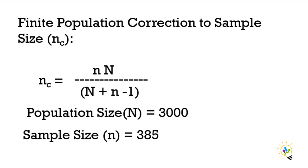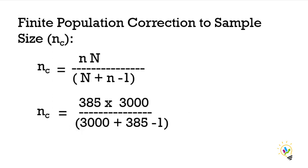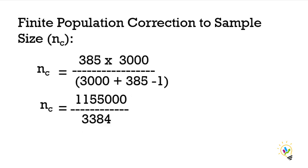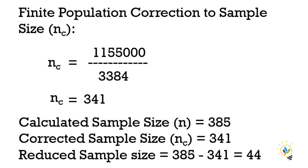The population size is 3000 and the sample size is 385. Substituting into the equation, the finite population corrected sample size nc = 341. The calculated sample size was 385 and the corrected sample size is 341 — a reduction of 44. This reduction happened because the sample size was greater than or equal to 10 percent of the population size, so finite population correction was applied.